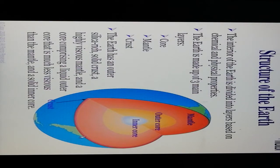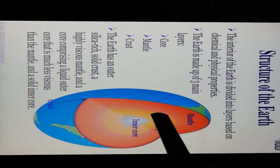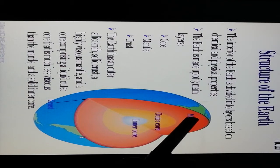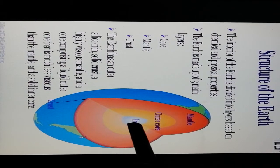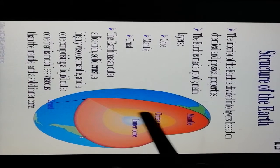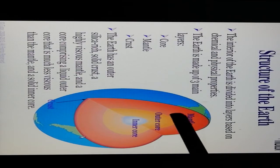This is the general introduction of plate tectonics. The interior of the Earth is divided into layers based on chemical and physical properties. There are three main layers: the first is the core, the second is the mantle, and the third is the crust. The outermost part is the crust, and the Earth has an outer silica-rich layer.